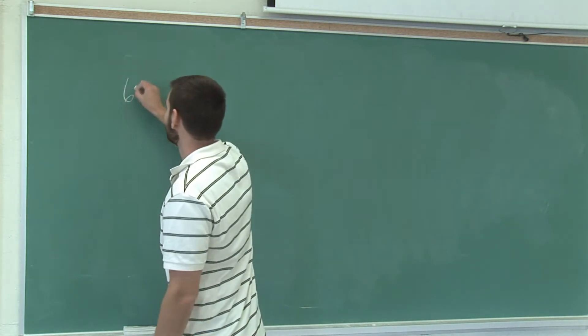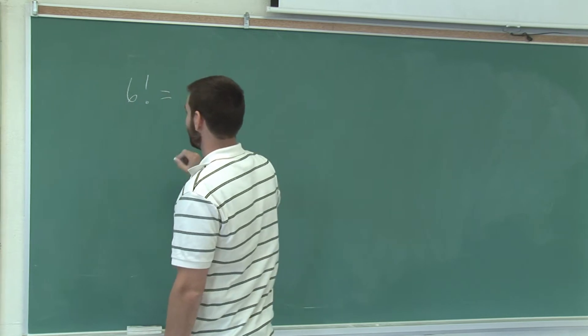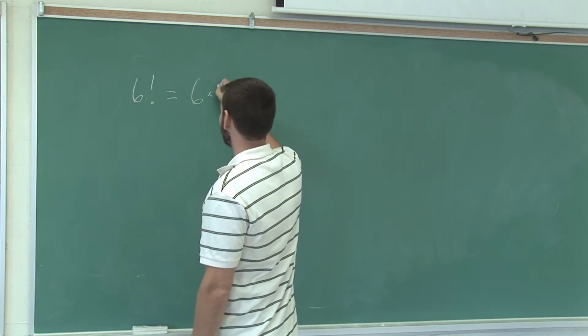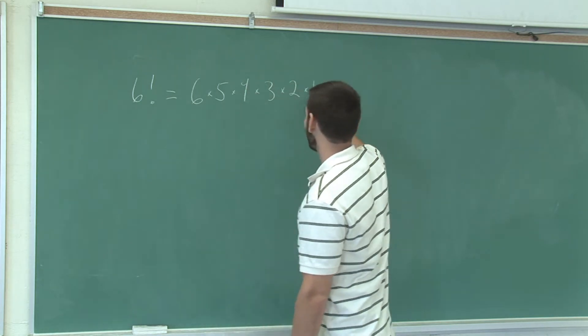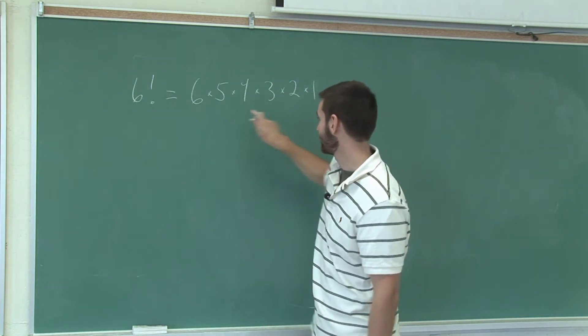For example, 6 factorial is the same as 6 times 5 times 4 times 3 times 2 times 1. This is the same as this.